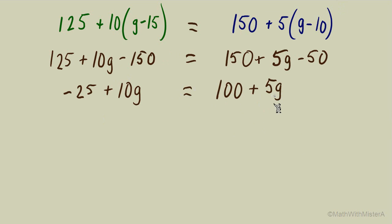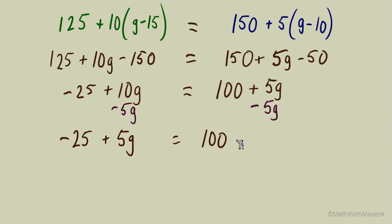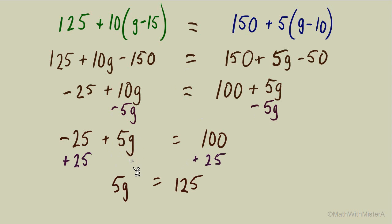We see terms with variable G on both sides, so we subtract 5G from both sides. On the right we're left with just 100, and on the left we combine 10G minus 5G to get 5G, keeping the negative 25. To get the constant on the other side, we add 25 to both sides, leaving 5G on the left and 125 on the right. We then divide both sides by 5, giving us G equals 25.